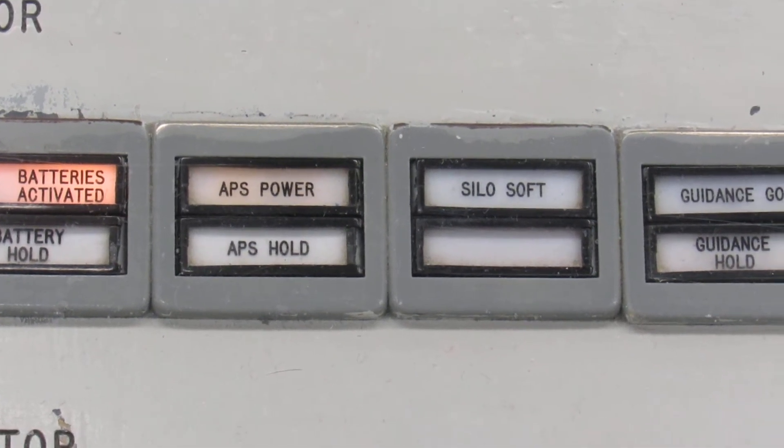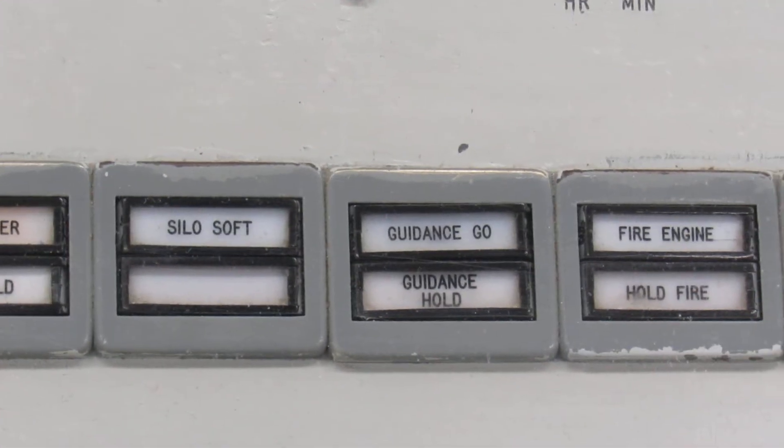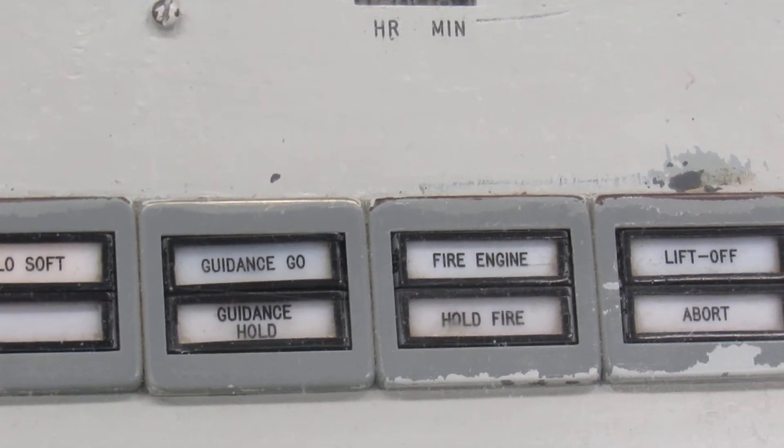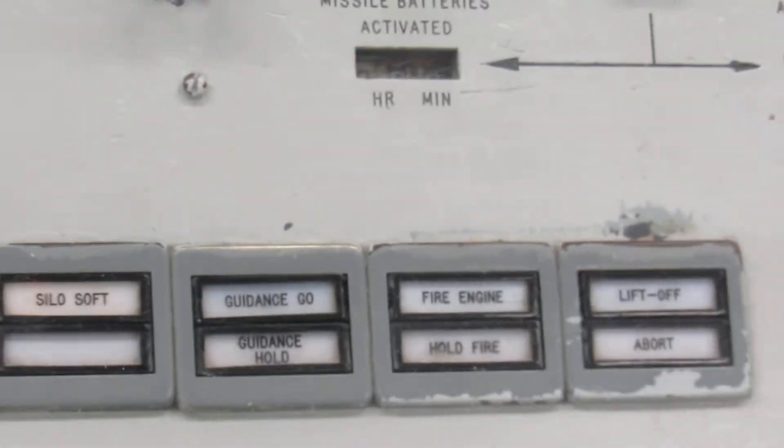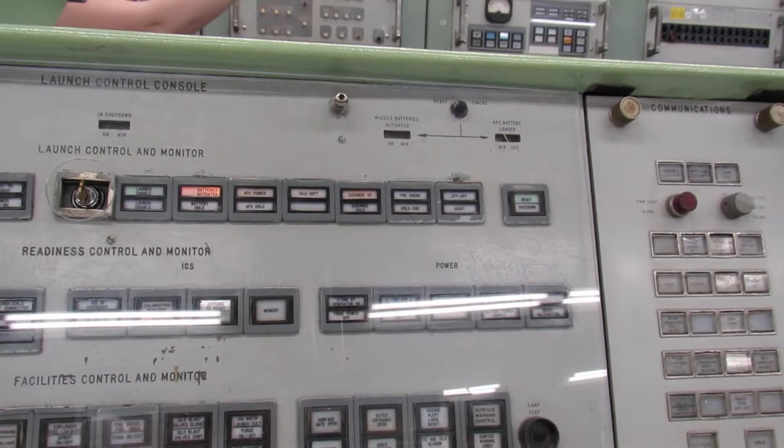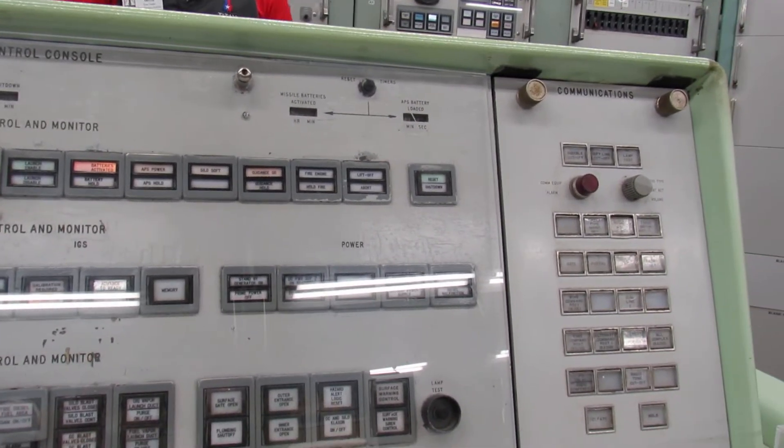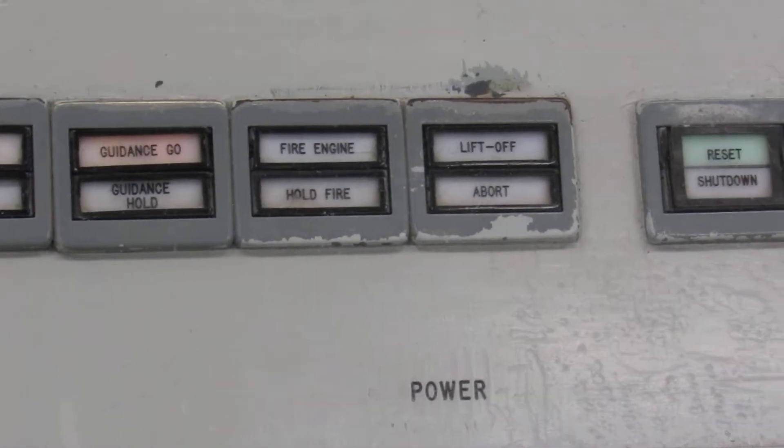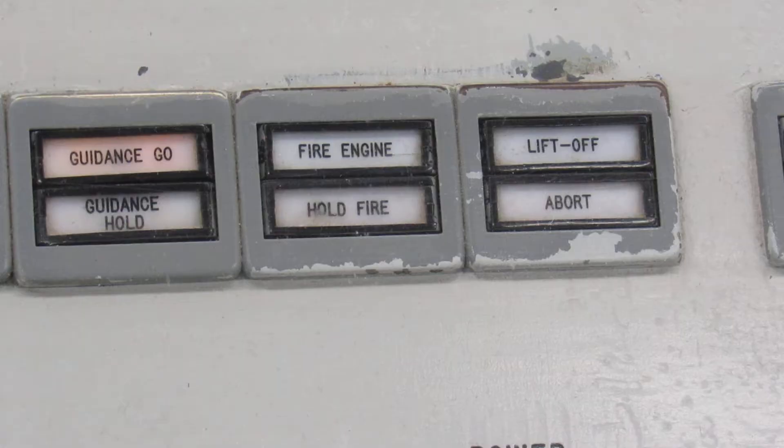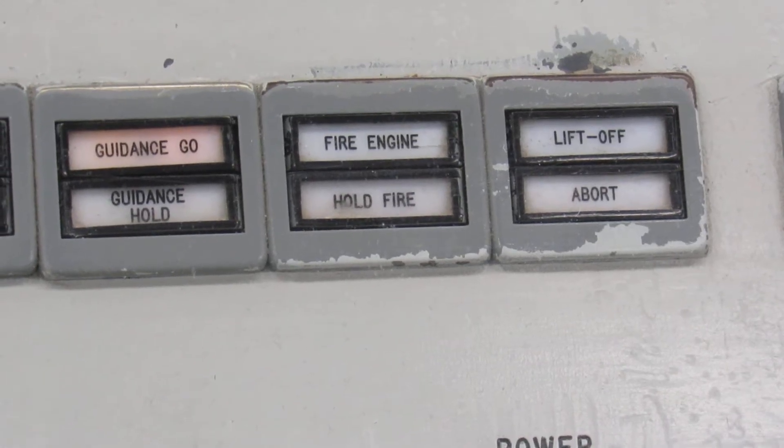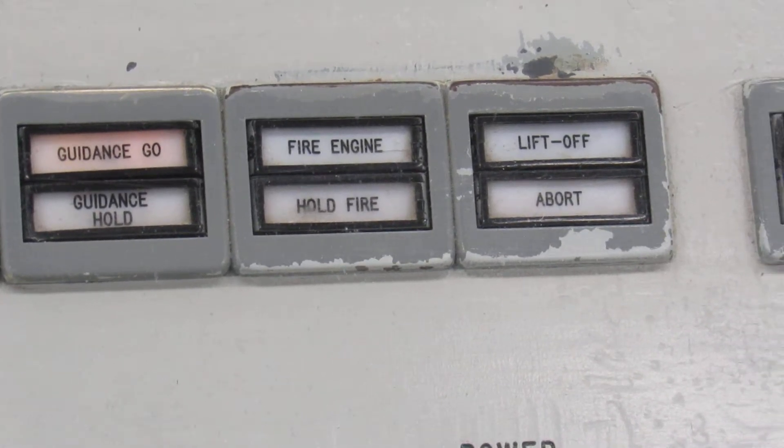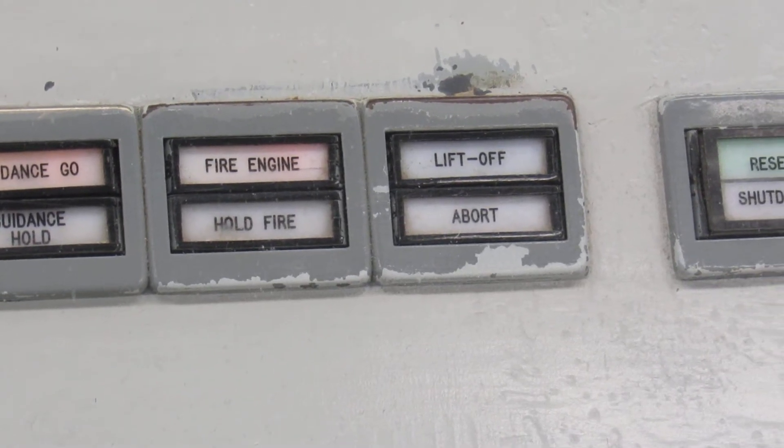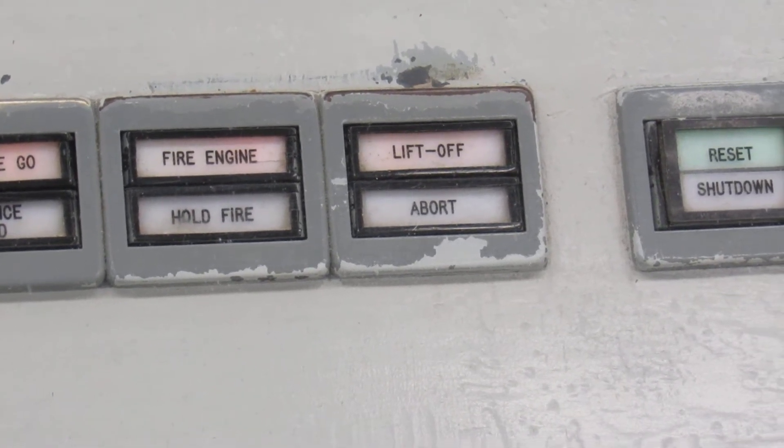APU power on. Batteries are fully charged. Next up, we should get silo soft. Silo door is open. And what we should also have, guidance go. Guidance go. We're communicating with the missile for the very last time. It knows where it is and where it's going. It'll take just a few more seconds for all those systems to finish calibrating before, hopefully, we get something that sounds like that. Fire engine. Followed by liftoff. There we go.